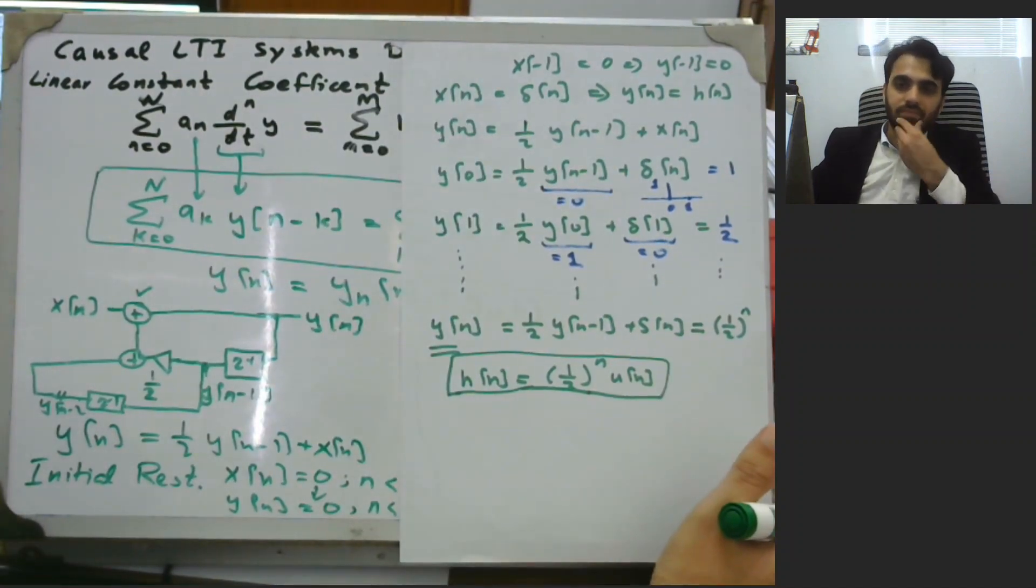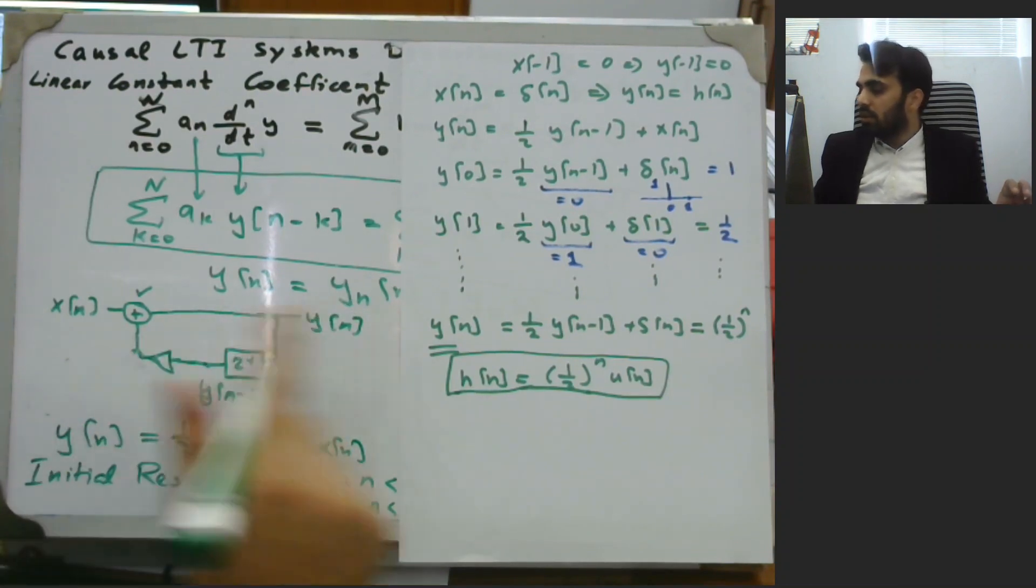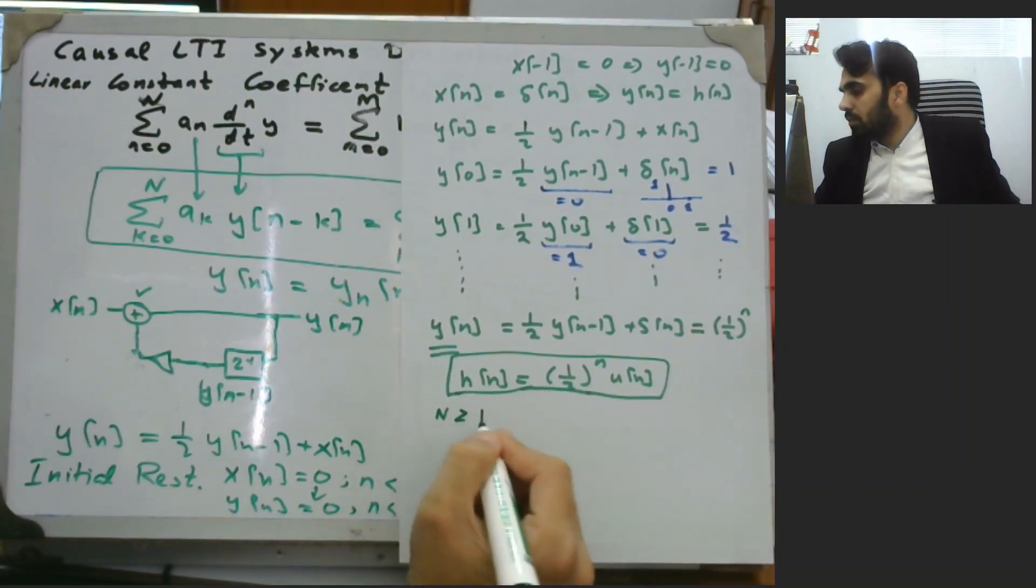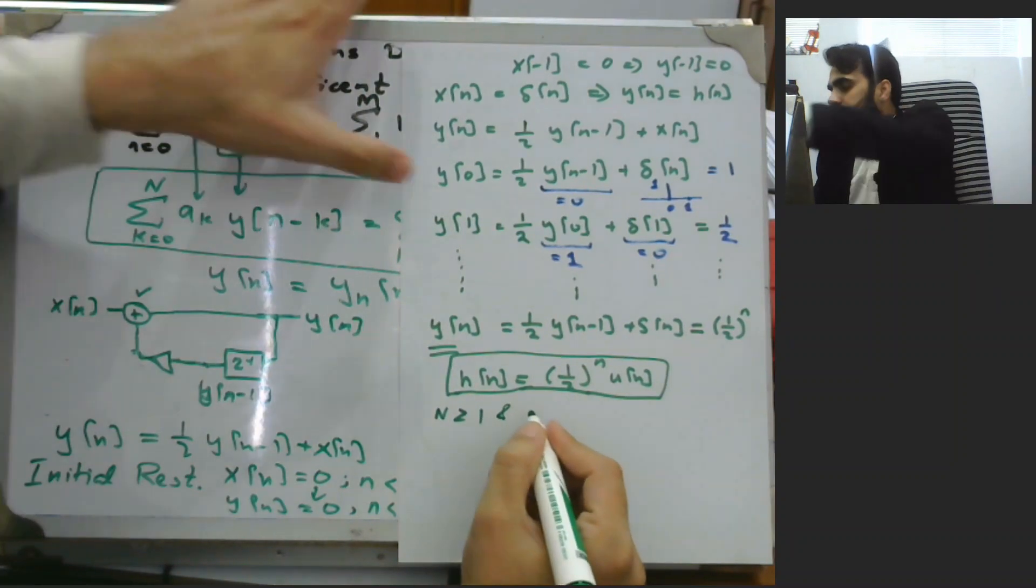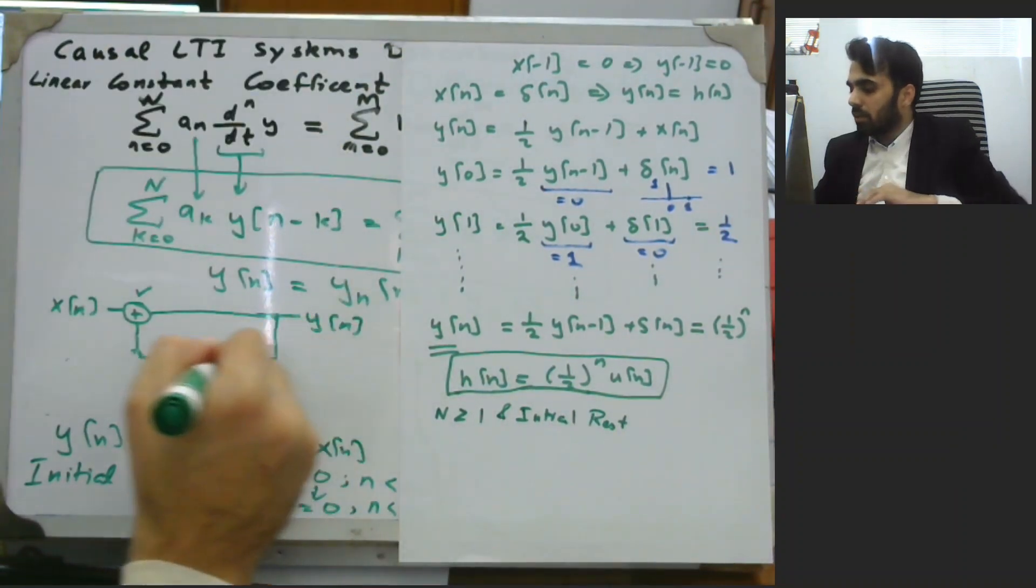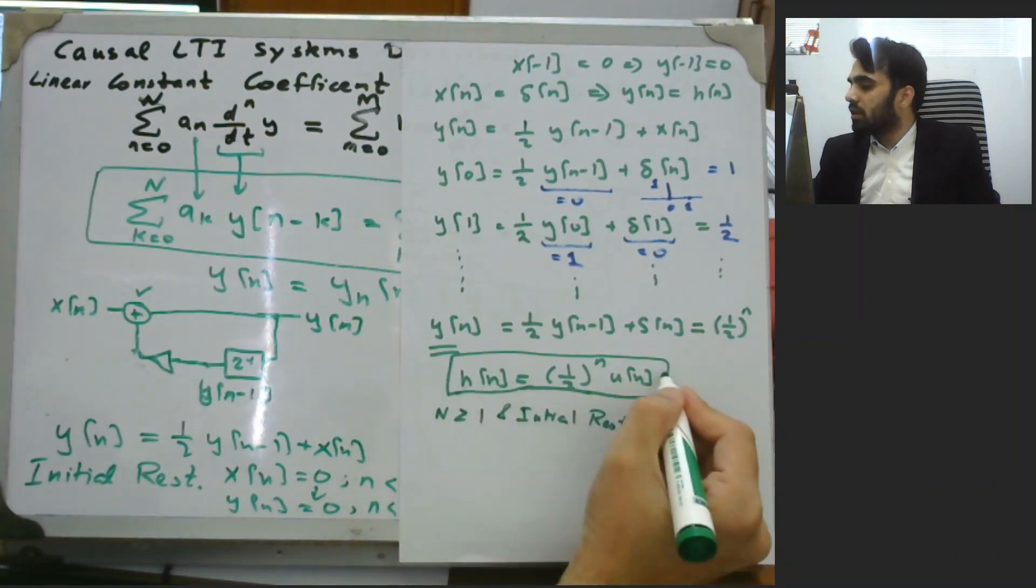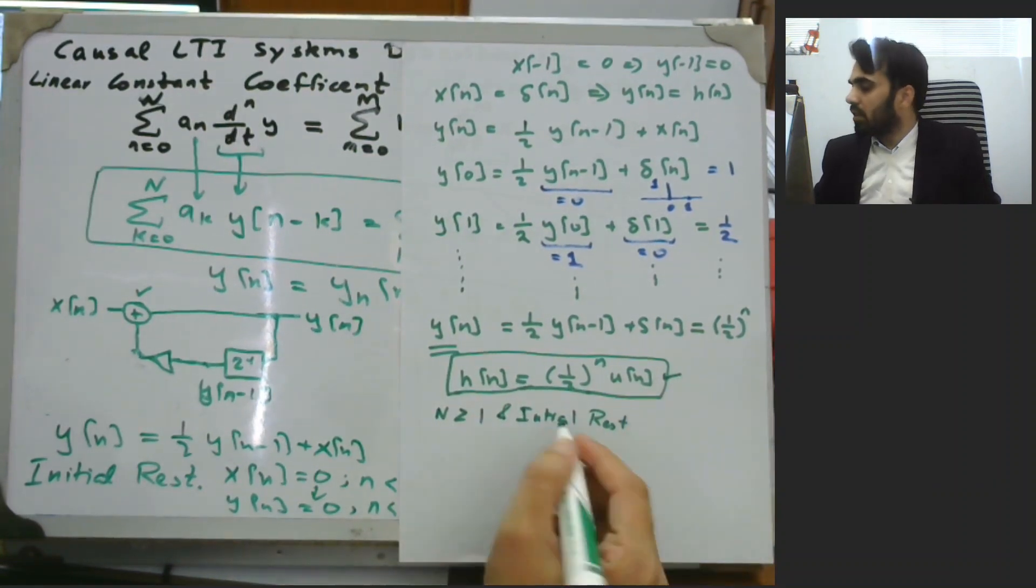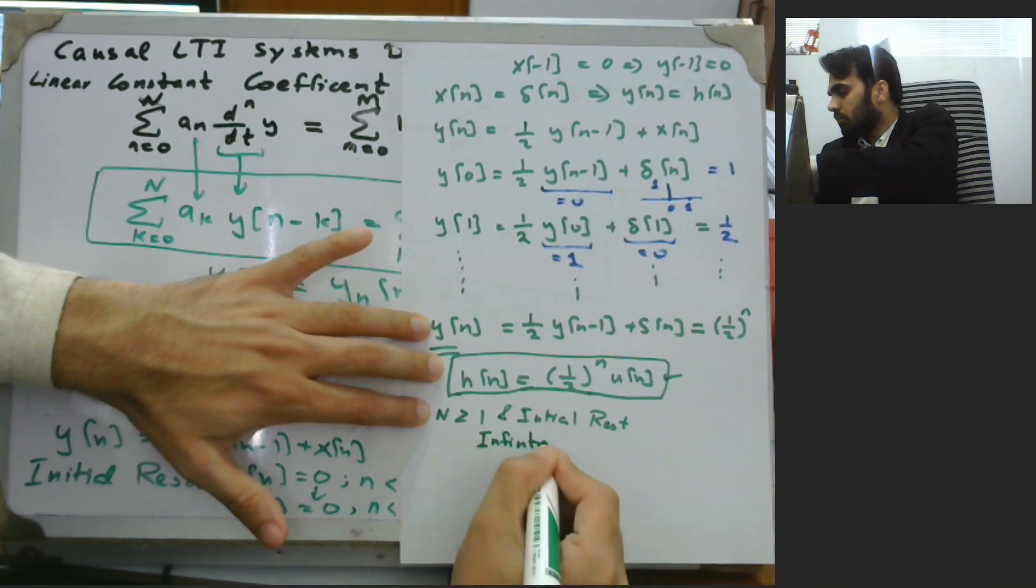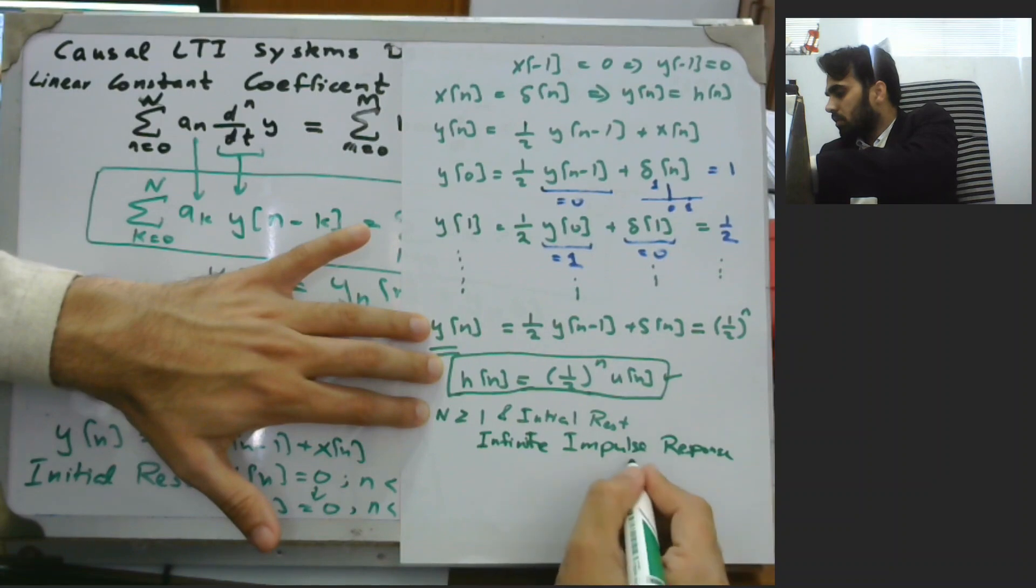So the condition of initial rest and a feedback path, that is when n greater than or equal to 1, and initial rest, we would always have a feedback path. And this feedback path would give us an impulse response that is infinite duration. We can call it as infinite impulse response, or simply IIR.